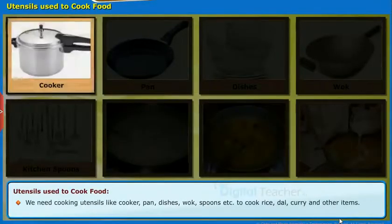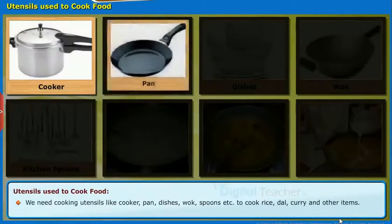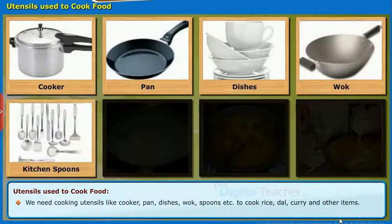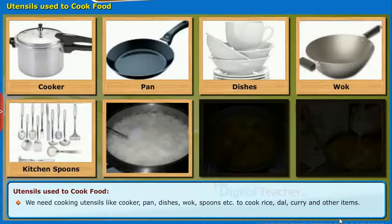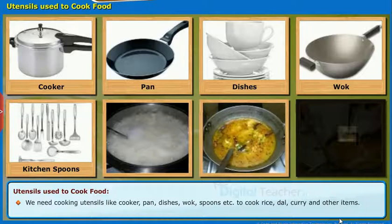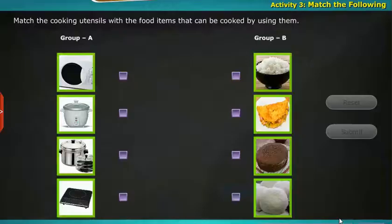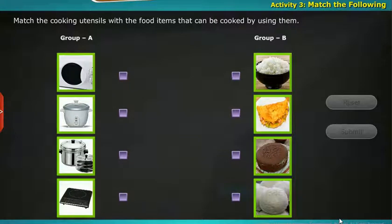We need cooking utensils like a cooker, pan, dishes, wok, spoons, etc. to cook rice, dal curry, and other items. Activity 3: Match the following — match the cooking utensils with the food items that can be cooked by using them.